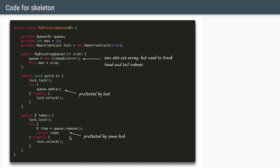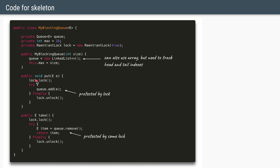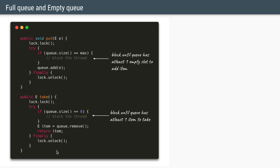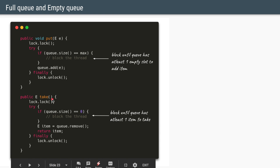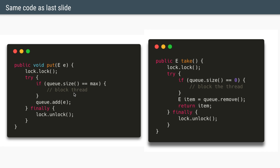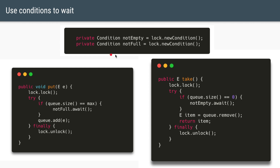In our put method, we surround queue.add with lock acquire and release. Similarly for take, we surround queue.remove with acquiring and releasing the lock. The lock is of type ReentrantLock. Now let's add blocking logic: in put, if the size of the queue is at maximum we block the thread; in take, if the size is zero we block the thread.